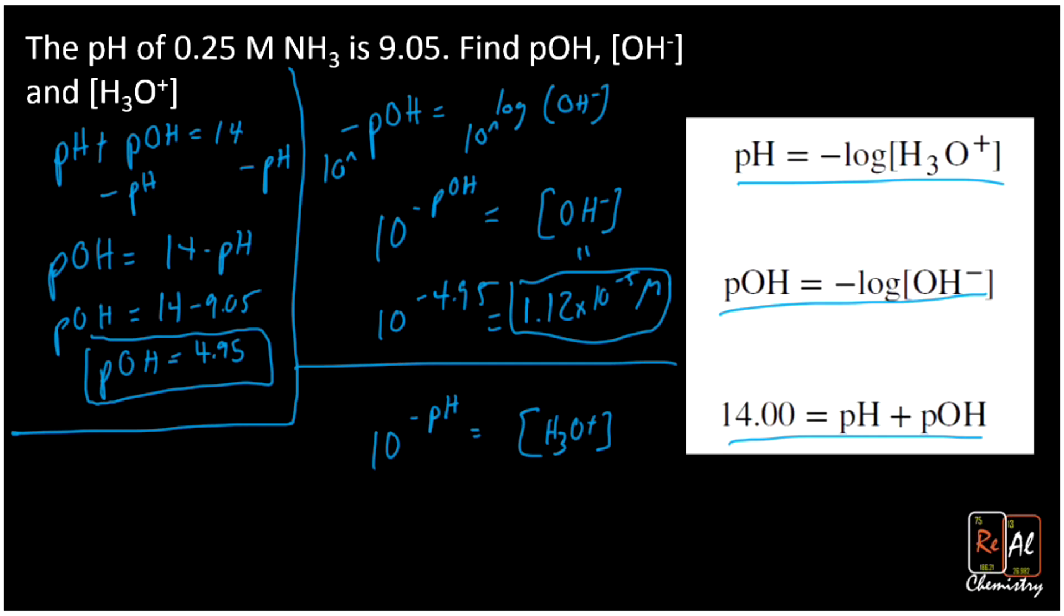10 raised to negative 9.05, which is my pH, is going to give me my hydronium ion concentration. 8.91 times 10 to the minus 10 molar.